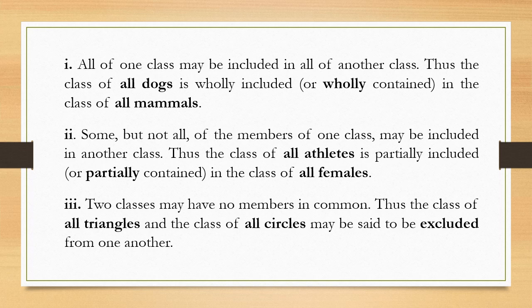Next, some but not all of the members of one class may be included in another class. For example, all athletes is one class and the other class is all females. We cannot say that all athletes are females — yes, some athletes are females but not all. So some but not all members of one class are included in another class.